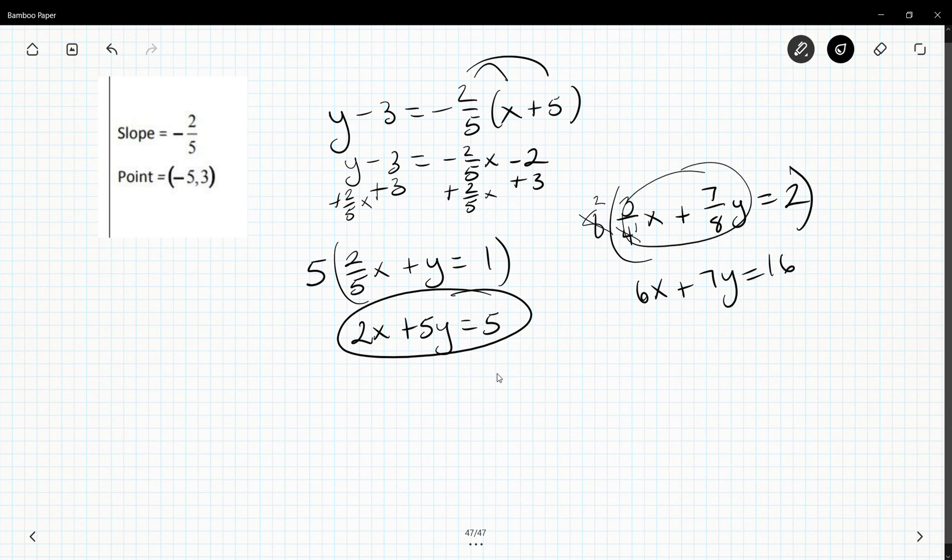I'm not really going to have kids do that much, but this is how we go to standard form. Start with point-slope, distribute and simplify, combine like terms. Get x's and y's on one side, constants on the other, then get rid of fractions by multiplying by the denominator.